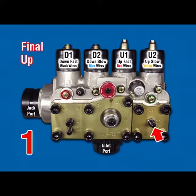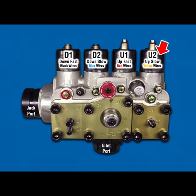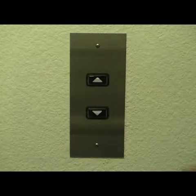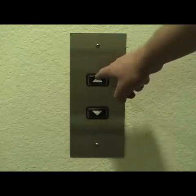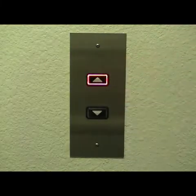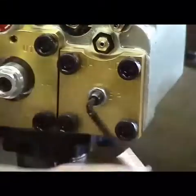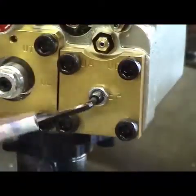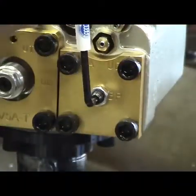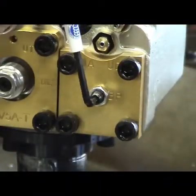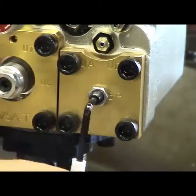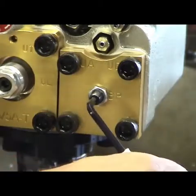BP Bypass. Car at lower floor with no load. Disconnect U2. Register an up call — car should not move. Turn BP clockwise until car moves, then counterclockwise until car stalls, plus a minimum of one-half turn.